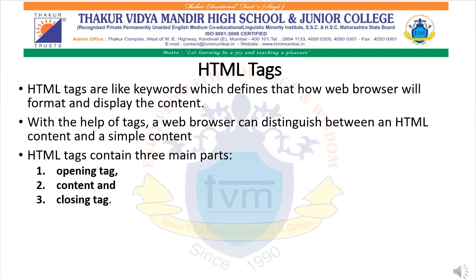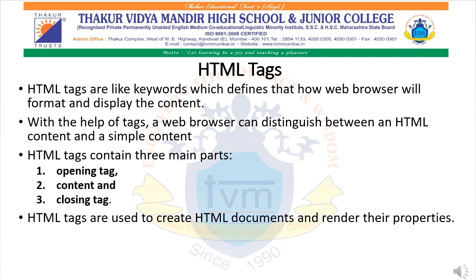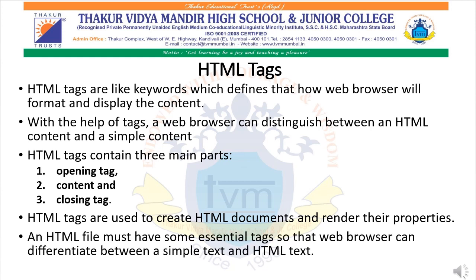The close tag may be optional in many tags. When a web browser reads HTML, it reads from top to bottom and left to right. HTML tags are used to create HTML documents and render their properties. Each HTML tag has different properties. An HTML file must have some essential tags so that the web browser can differentiate between simple text and HTML text. One can use as many tags as required.